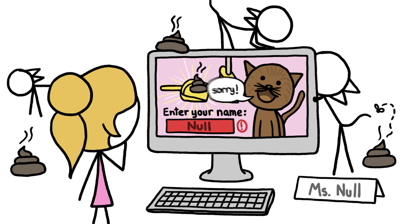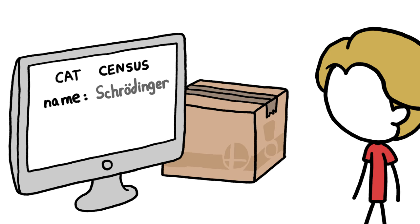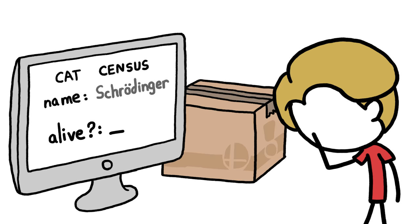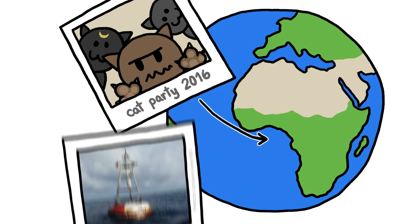All this is a reminder that our world is complicated, and it's not always as easy as you might think to map our messy reality into a computer system. So the next time you see a photo tagged way out in the Atlantic Ocean, you'll know what's happened — unless it really is a photo of that one lonely weather buoy.